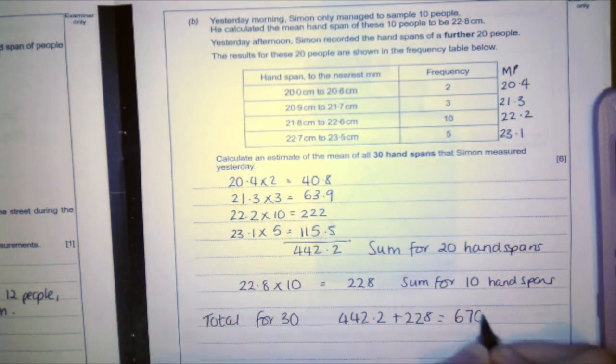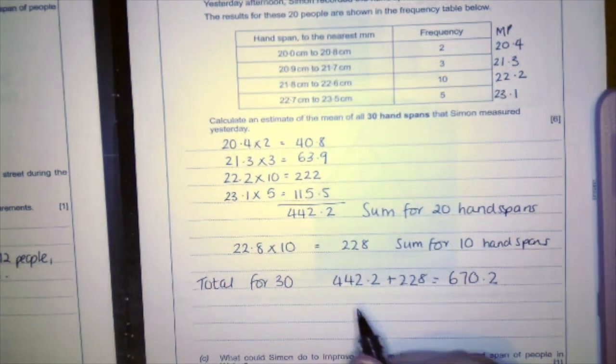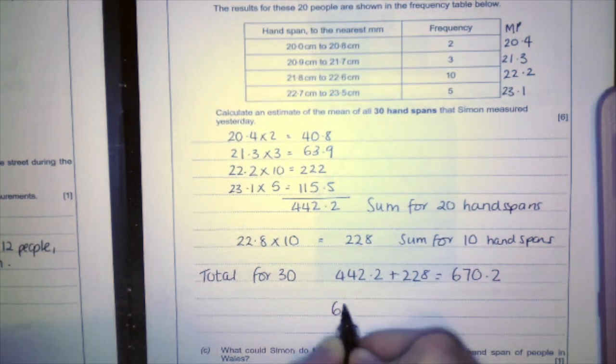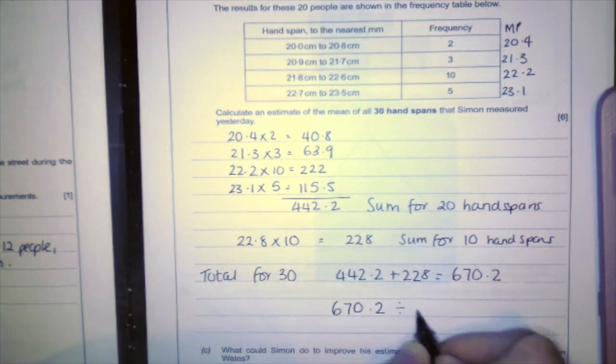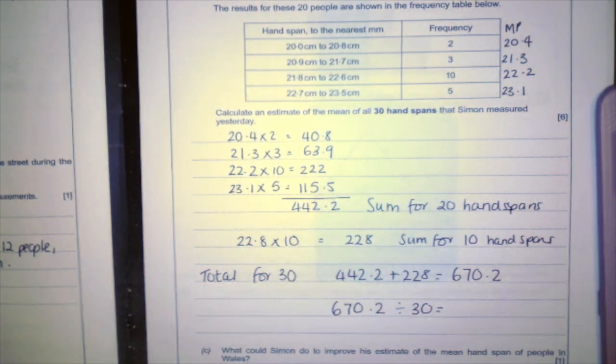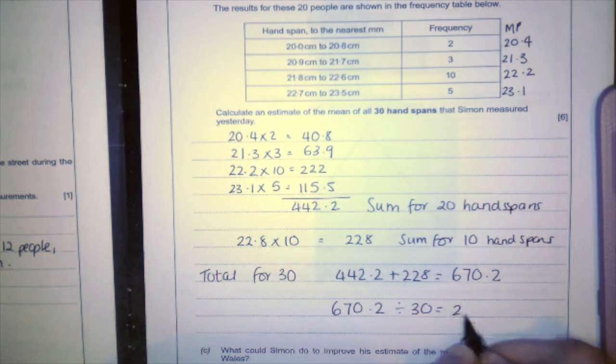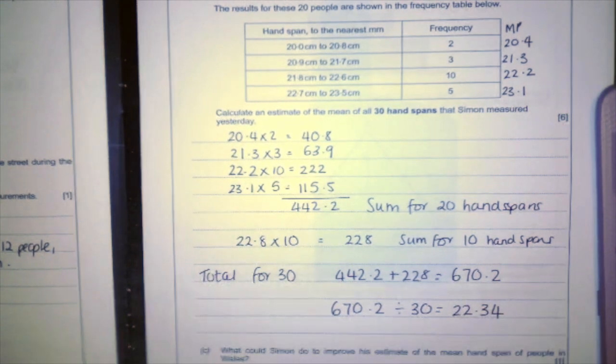So that's 670.2. And now to do an estimate for the mean, I would do 670.2 divided by 30. And that gives me an answer of 22.34.